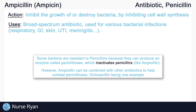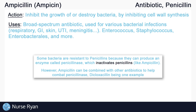However, ampicillin can be combined with other antibiotics to help combat penicillinase, dicloxacillin being one example. Examples of genera or types of bacteria that ampicillin can treat include Enterococcus, Staphylococcus, Enterobacteriaceae like E. coli, and many more.